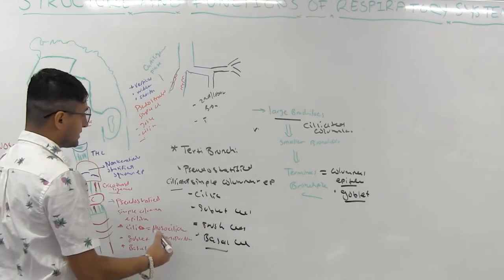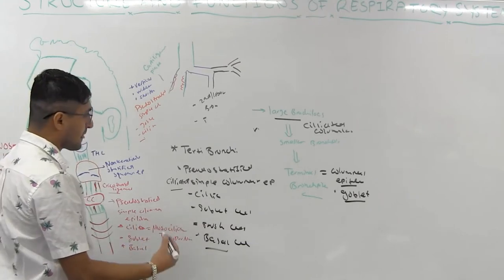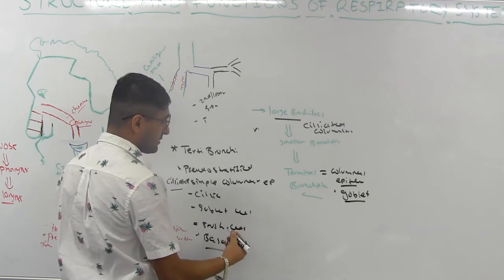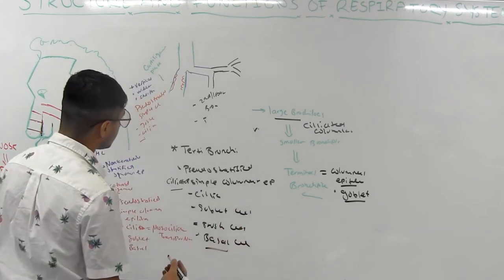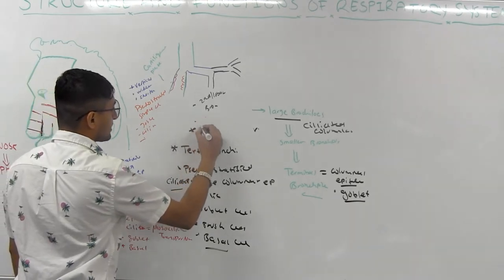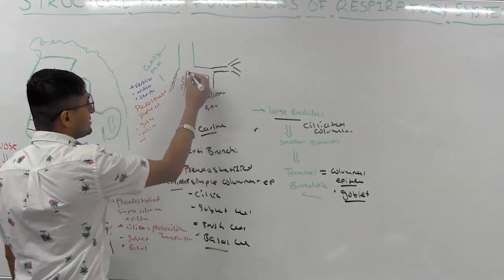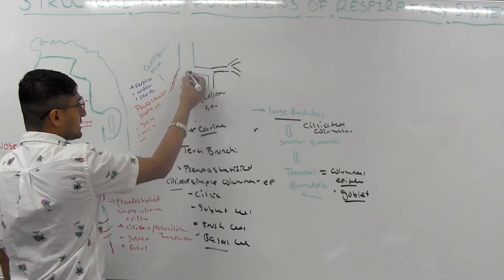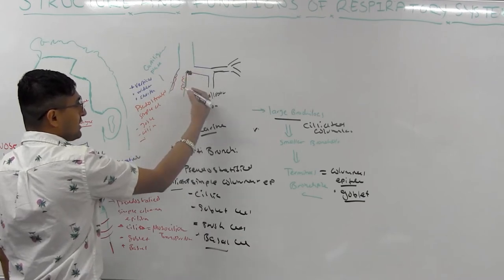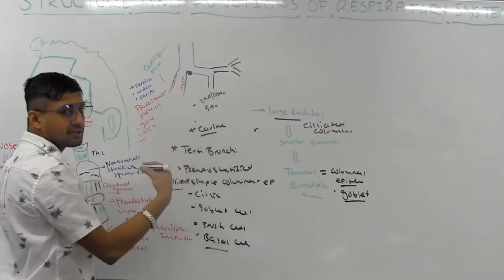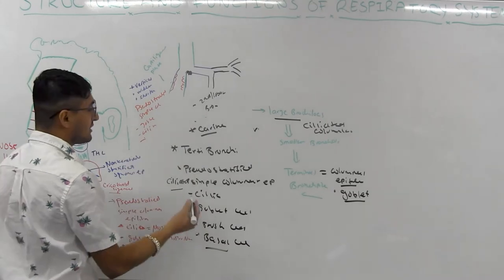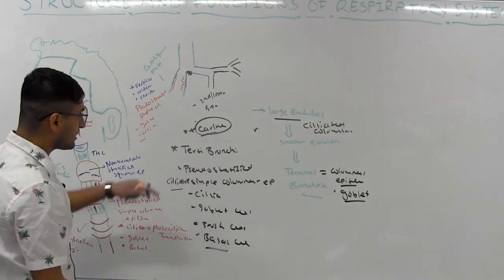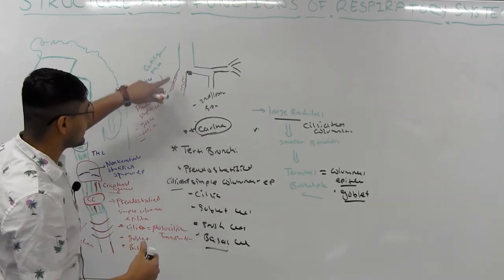All of this so far — from trachea to terminal bronchioles — is the conductive zone. Its main function is filtration and not allowing things in. Also important is the carina, located at the bifurcation of the trachea. It's a very sensitive area — whenever noxious substances come in, it triggers a cough reflex to expel them, acting as a defense mechanism. The same happens in the larynx.